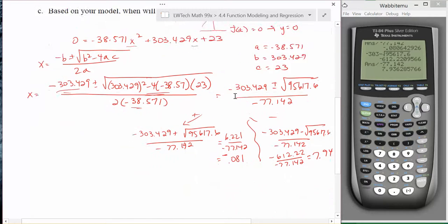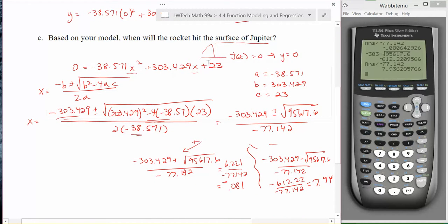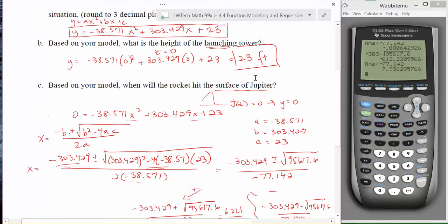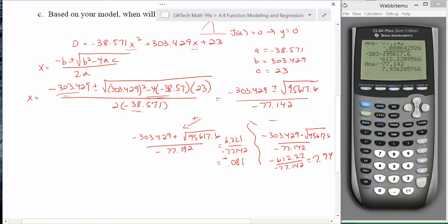So the question was asking, when is the rocket going to hit the surface of Jupiter? My values for x are my input, which is time in seconds. A solution that I do get here is negative 0.08 seconds. From a practical perspective, that doesn't make any sense. Nothing happened before we launched the rocket, so that is not the solution we're looking for. We just want to keep the positive answer in this case, which is 7.94 seconds. So it'll take that long for the rocket to come back and hit the ground again.